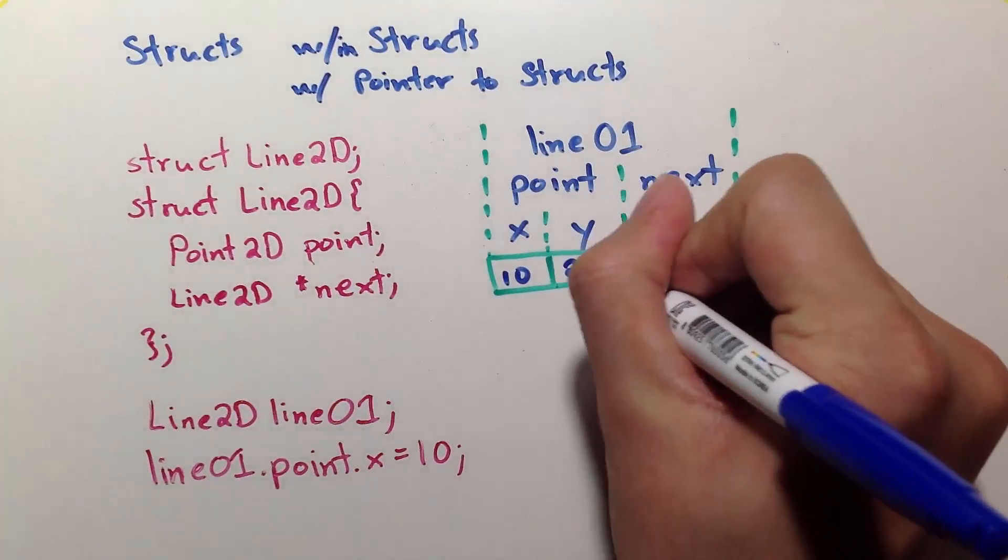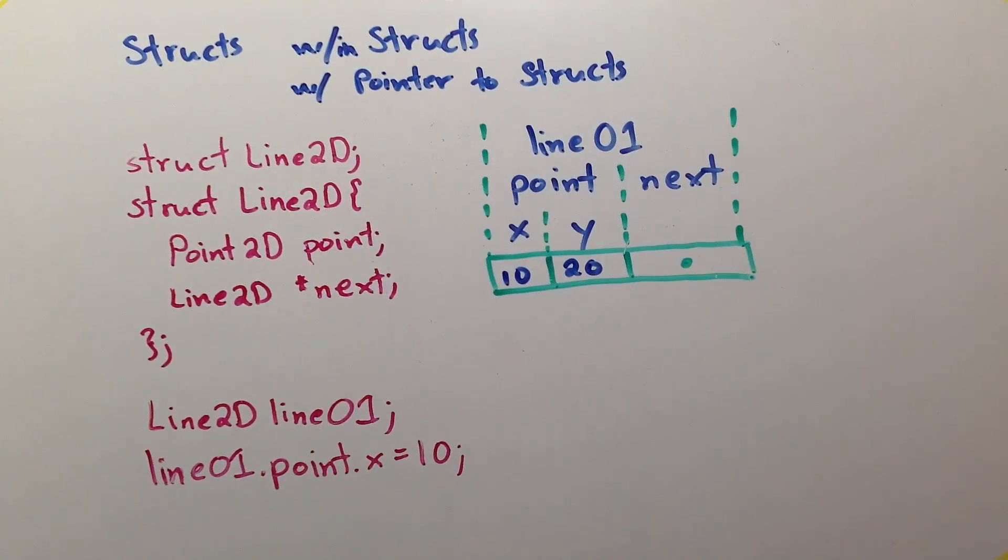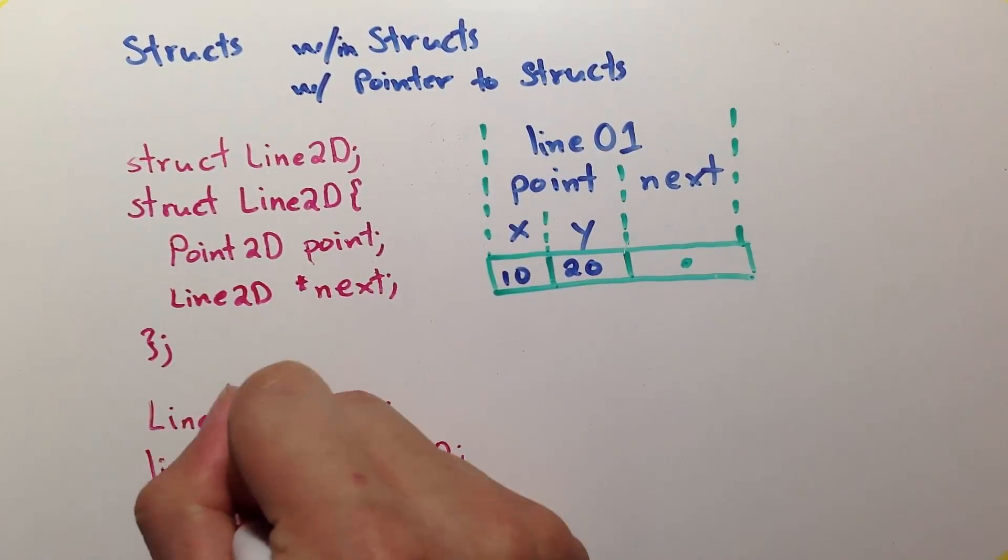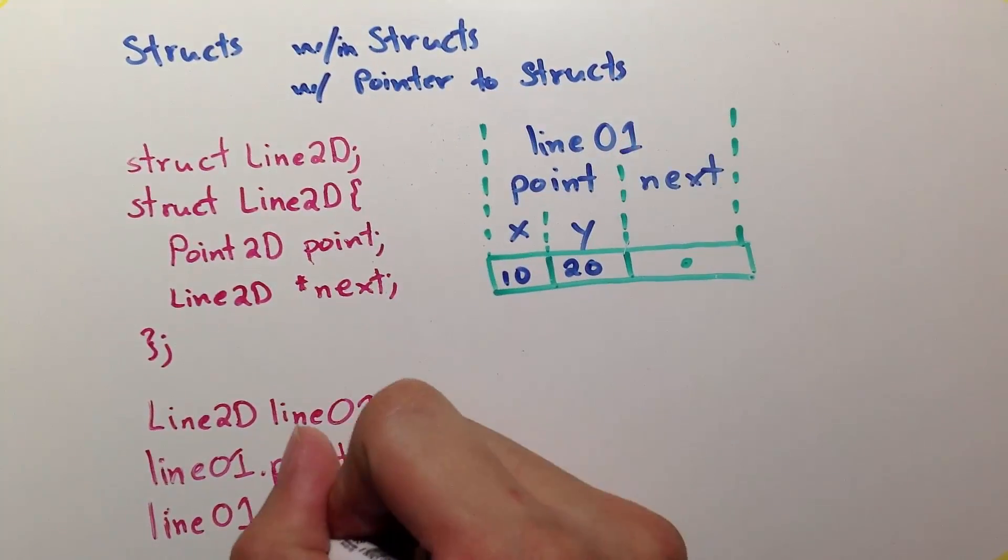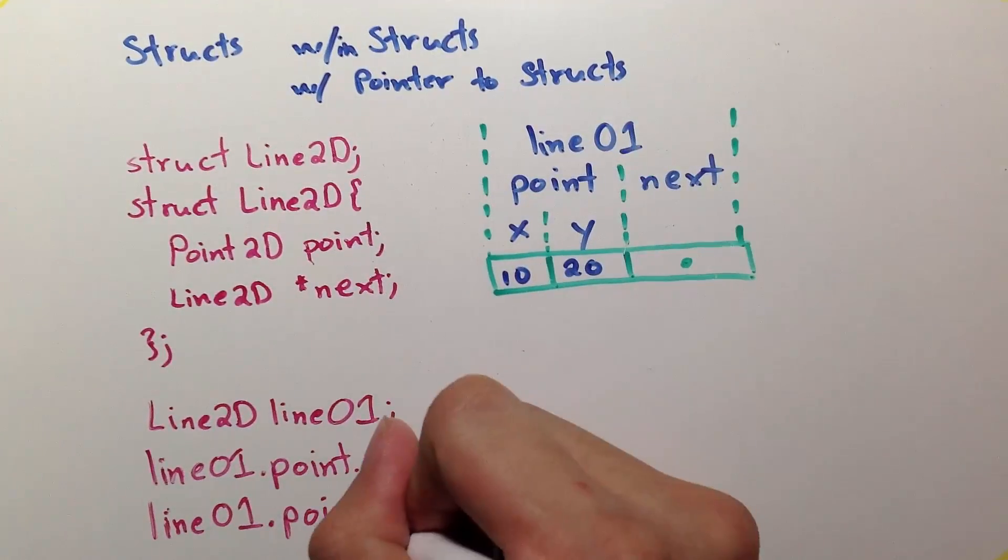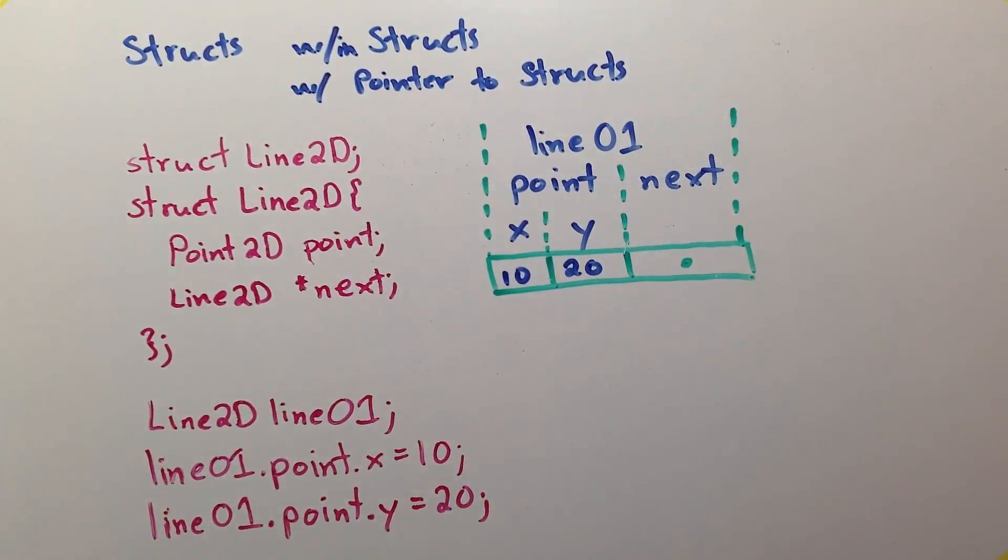Now, what if we want to change this variable to 20? Again, we simply follow the memory representation. We start with line01.point.y gets the value of 20.